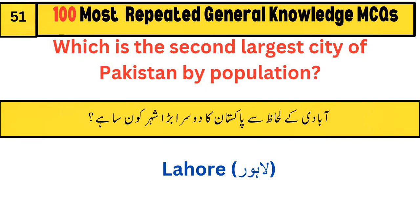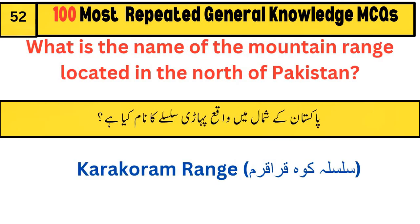Which is the second largest city of Pakistan by population? Lahore. What is the name of the mountain range located in the north of Pakistan? Karakoram Range.